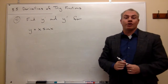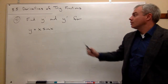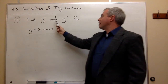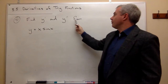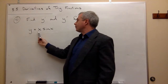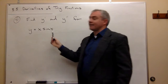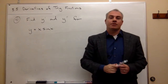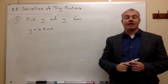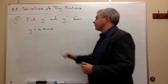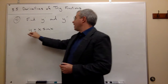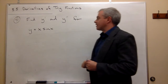In question number 41, we'd like to find y prime and y double prime for y equals x sine of x. So we'd like to find the first derivative and the second derivative for this function y equals x sine x.